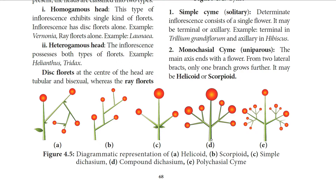A small simple dichasium is called cyme. The next type is polychasium, otherwise called multiparous cyme. Here the central axis ends in a flower, and lateral branches branch repeatedly in a similar pattern. Example: Nerium.